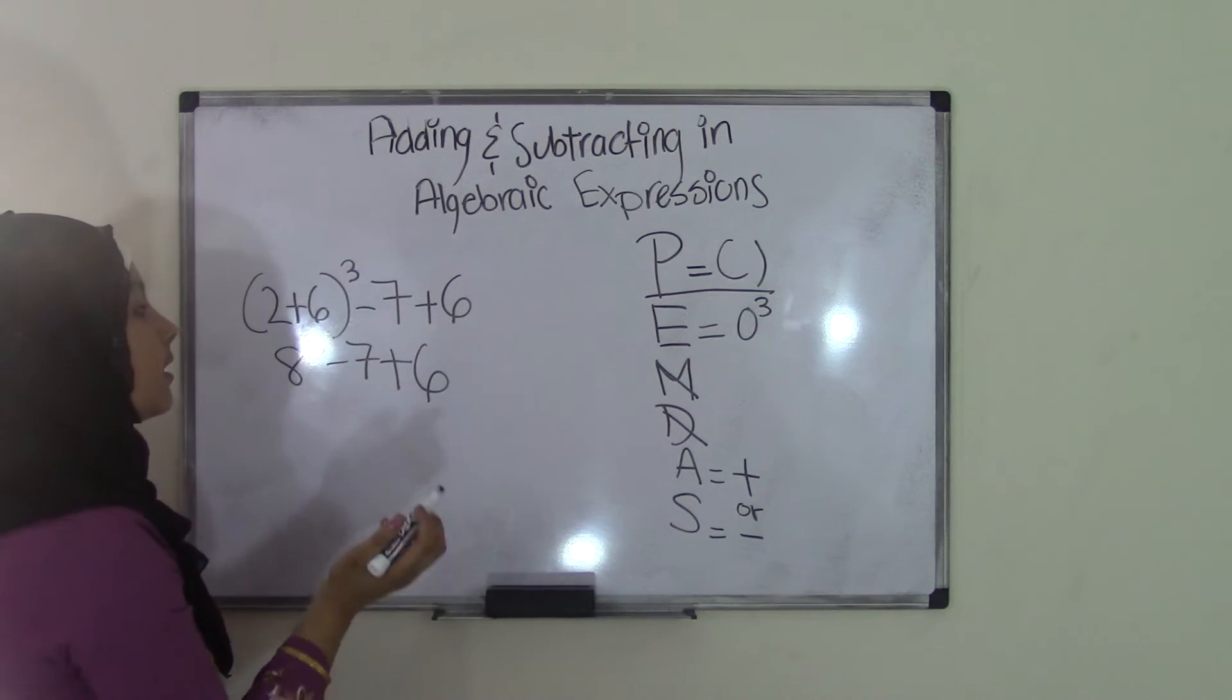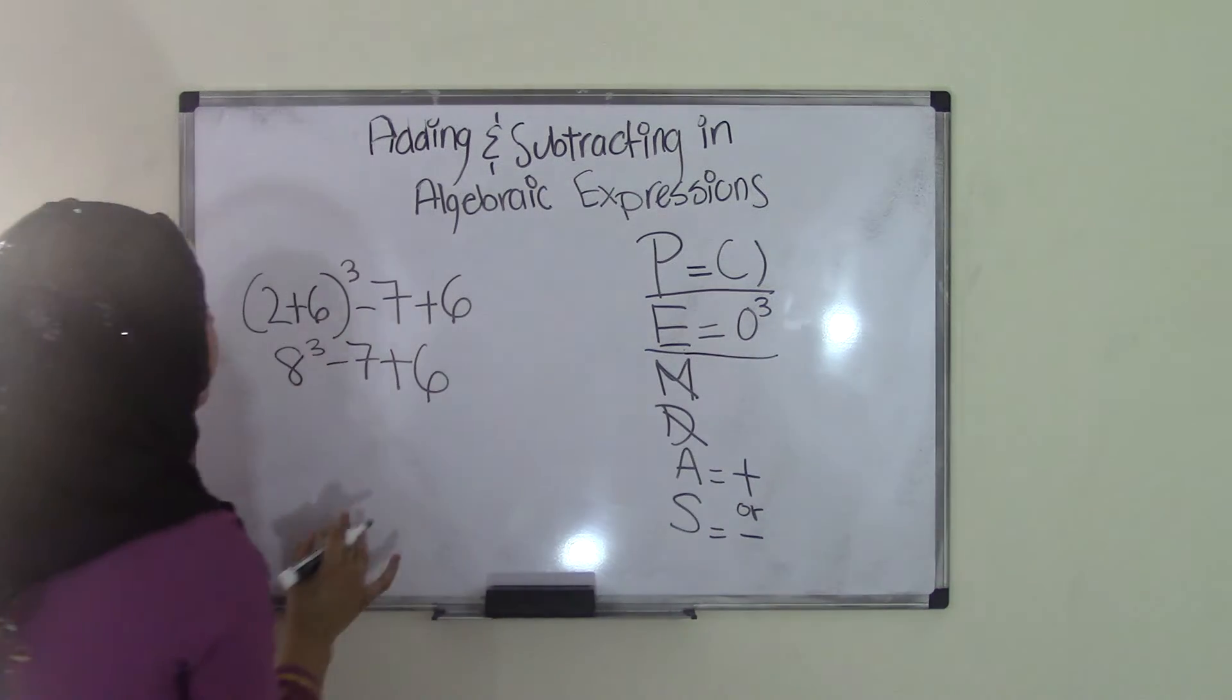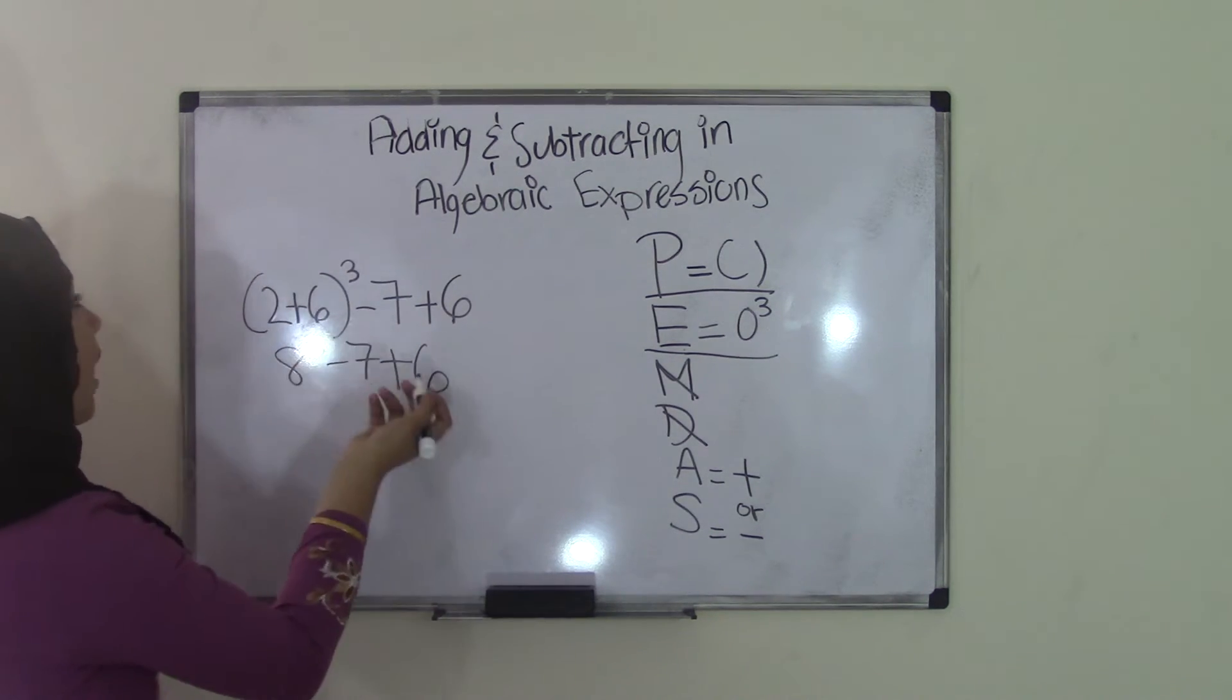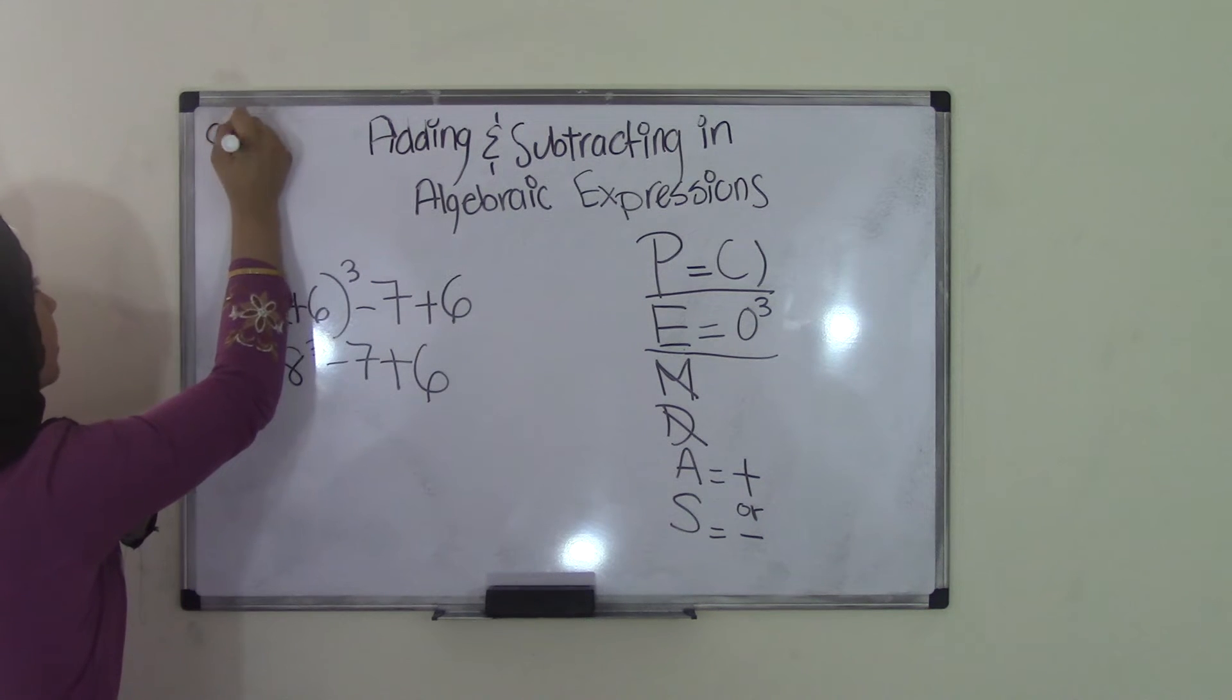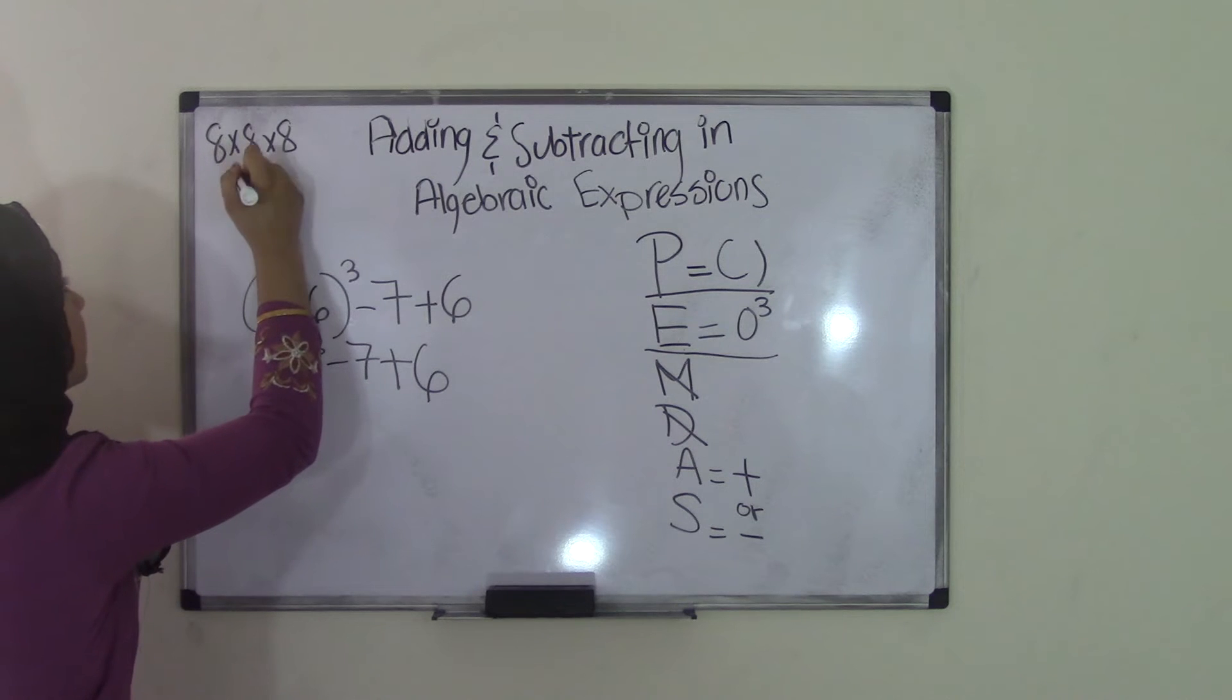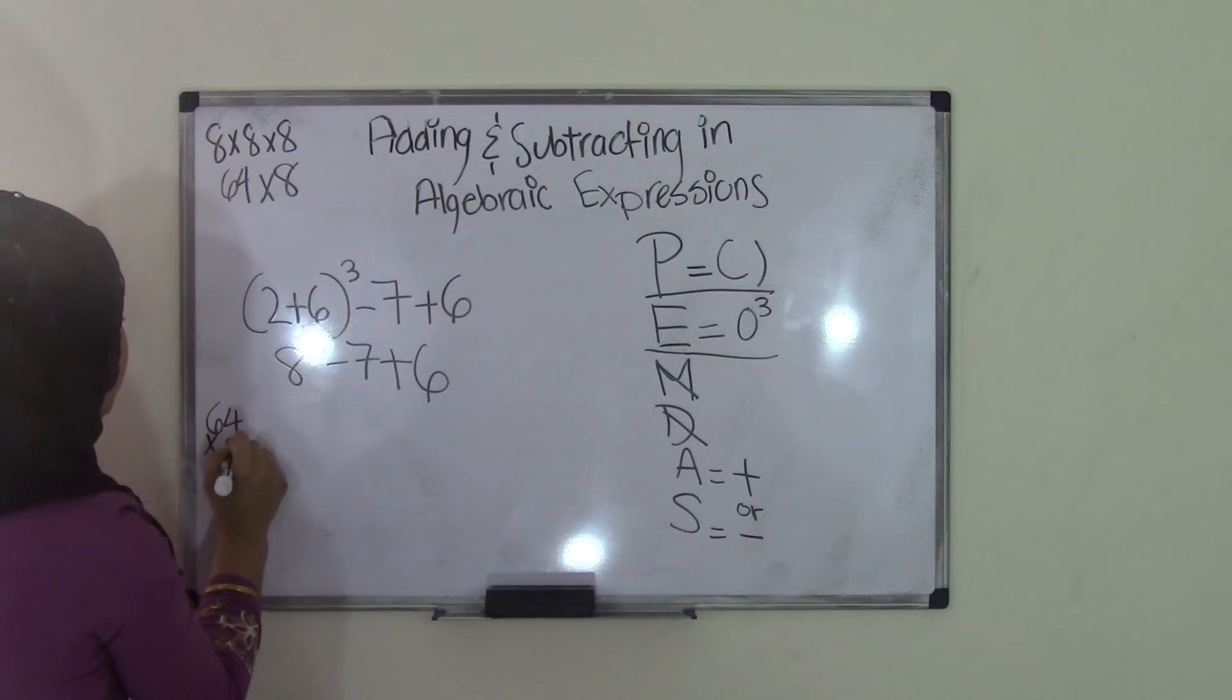Next comes exponents. So if you can see here, we have 8 to the power of 3, which is our exponent. So 8 to the power of 3 is the same thing as 8 times 8 times 8. So we know that 8 times 8 is 64 times another 8. If we come over here and do it, 64 times 8.